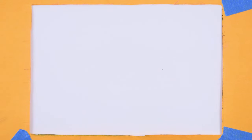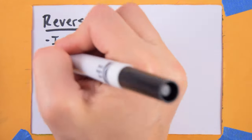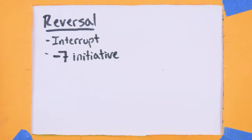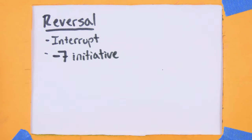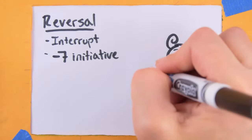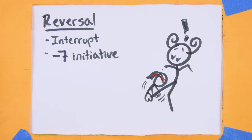If they have the right martial arts technique, they can perform an interrupt action called a reversal. This costs minus seven initiative score and requires a successful opposed unarmed attack test, with a threshold equal to the number of hits scored on your initial clinch test. Note that this refers to hits, not net hits, so it's much more difficult to pull off than the escape. If the reversal is successful though, your target becomes the one with the superior position in the clinch.